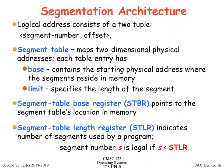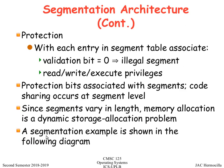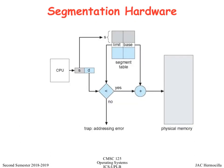The segment table information is stored in a segment table base register, which points to the segment table's memory location, and a segment table length register, which indicates the number of segments used. Protection is achieved via a validation bit per segment table entry — zero means illegal segment. You can also set access privileges and protection bits for each segment, such as code sharing permissions.